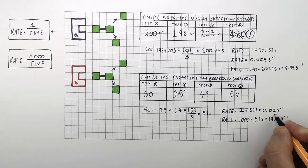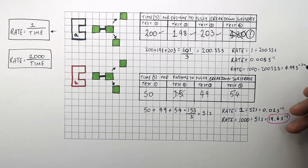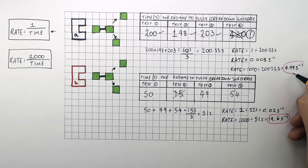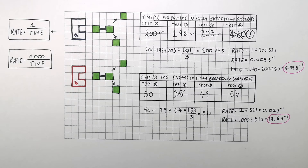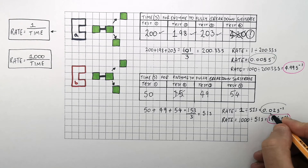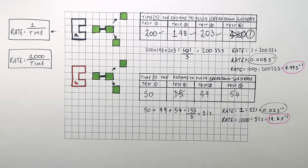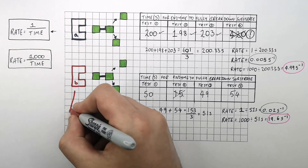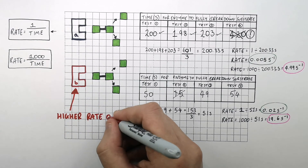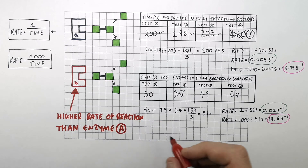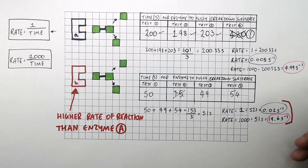As you can see, 19.6 seconds to the minus 1 is larger than 4.99 seconds to the minus 1, so enzyme B has an increased rate of reaction compared to enzyme A. And 0.025 seconds to the minus 1 is larger than 0.005 seconds to the minus 1, so using either equation shows that enzyme B has a higher rate of reaction than enzyme A.